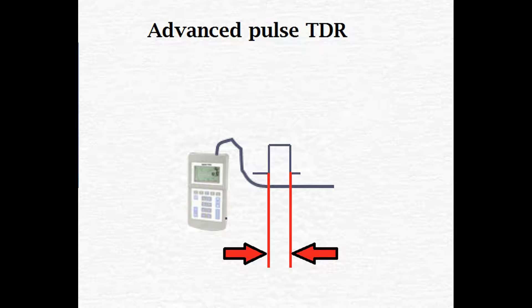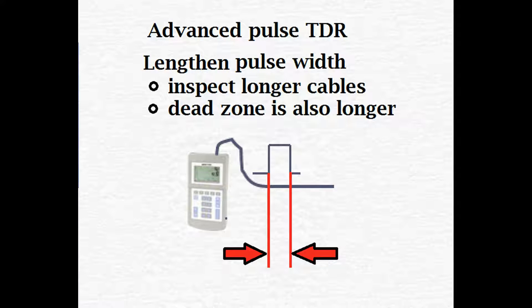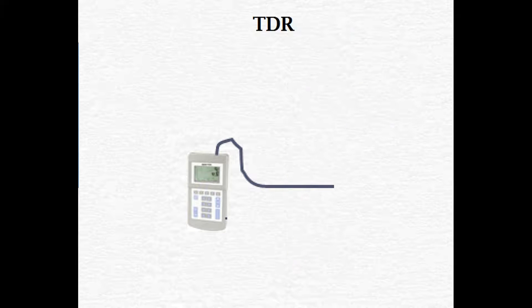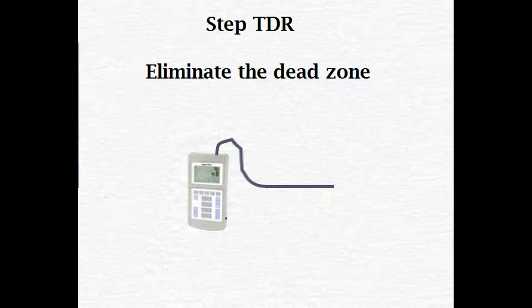You want to measure a longer cable? Make the pulse wider. But this will also increase your dead zone length. If you decide you just don't want to deal with this pulse width problem, spend a little bit more money, or maybe a lot bit more money, and buy a special TDR called a step TDR. It has technology in it that avoids this problem.